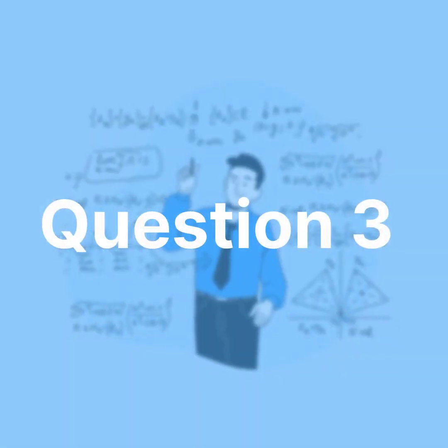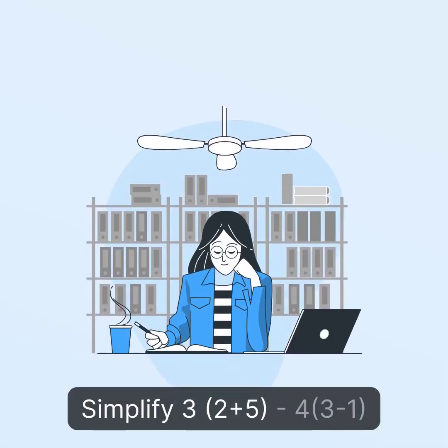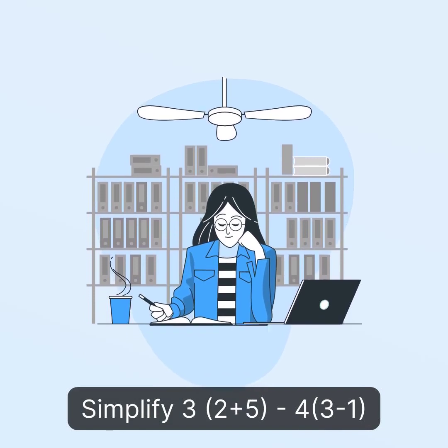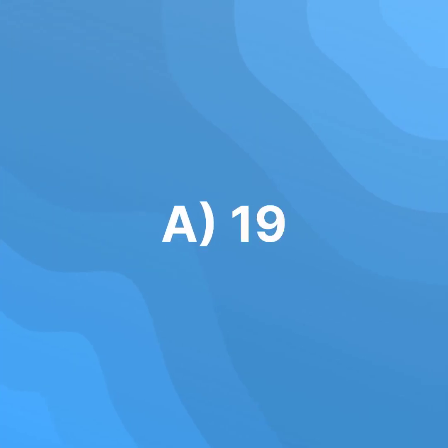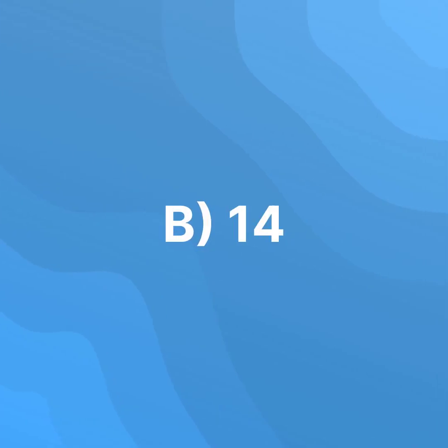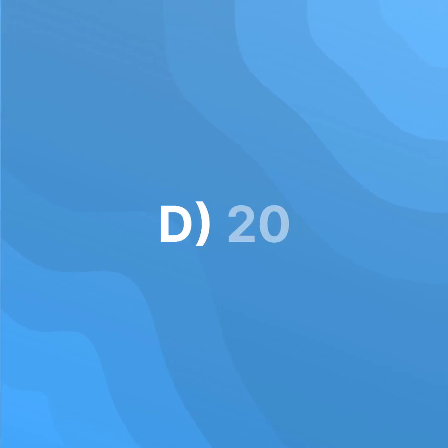Question 3. Simplify 3(2 plus 5) minus 4(3 minus 1). A. 19. B. 14. C. 13. D. 20.